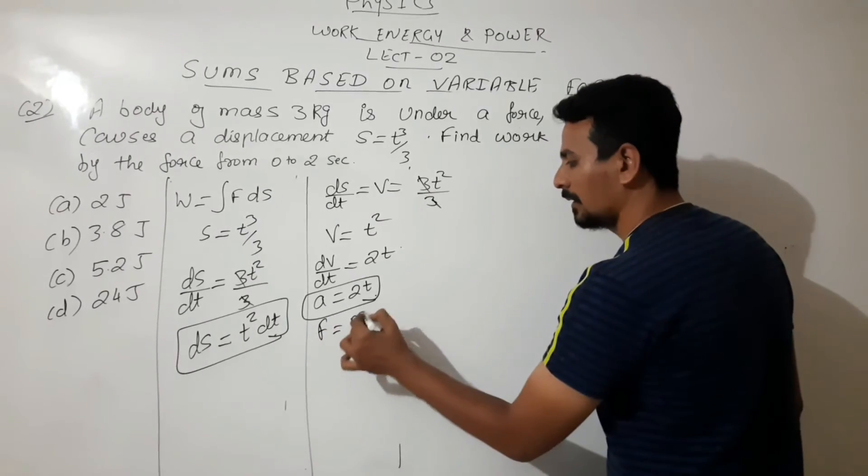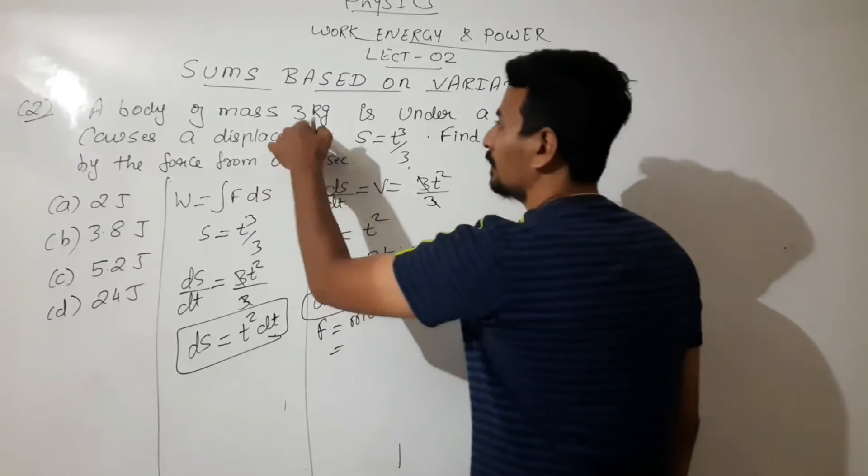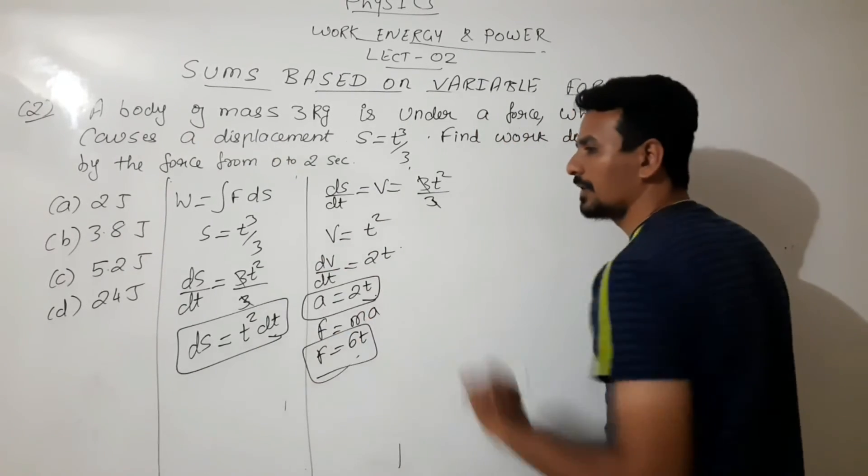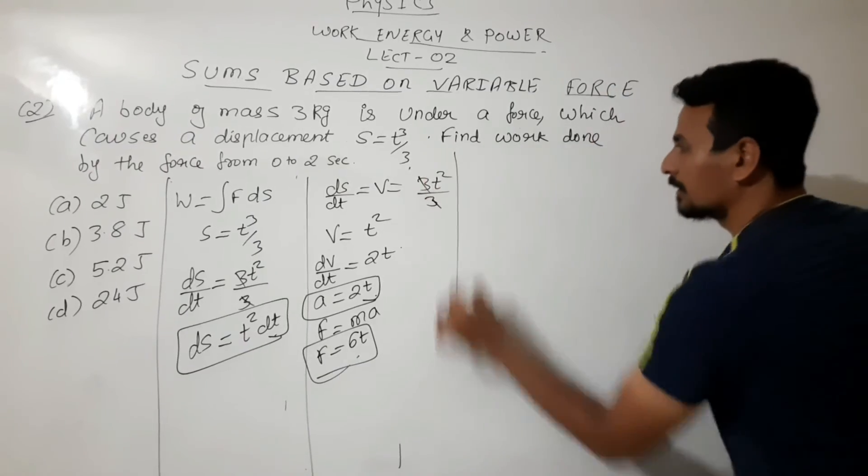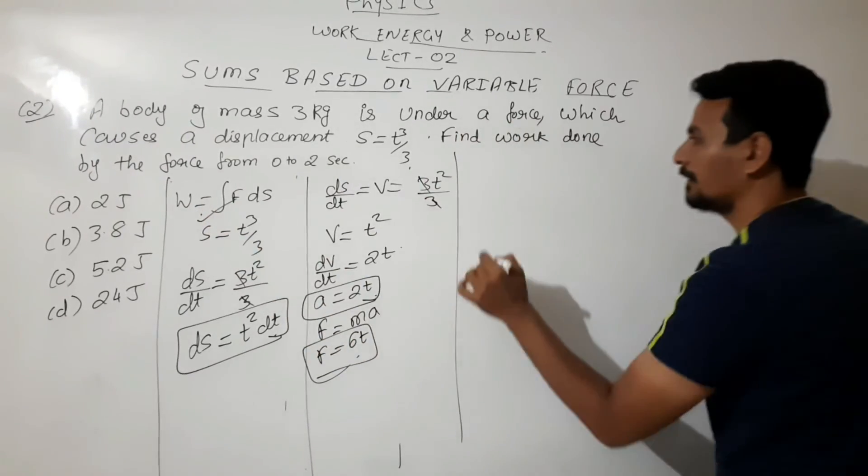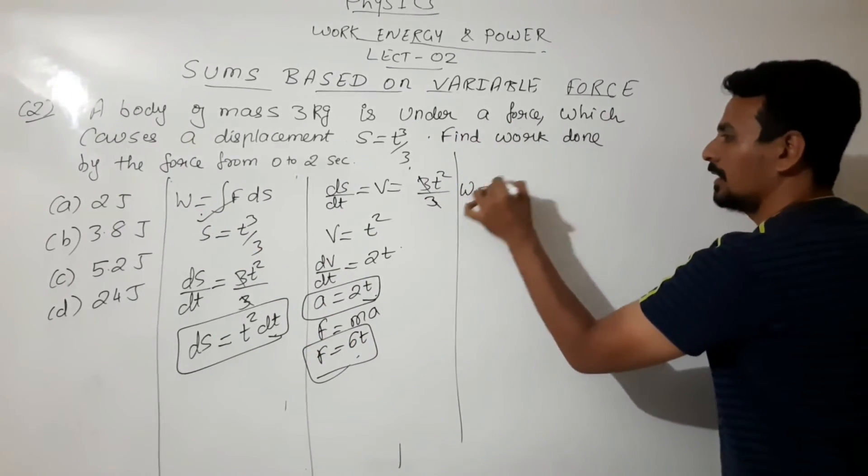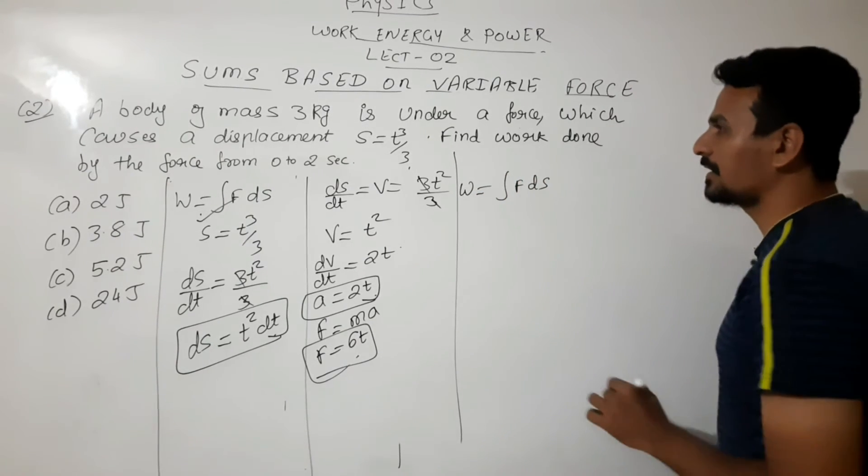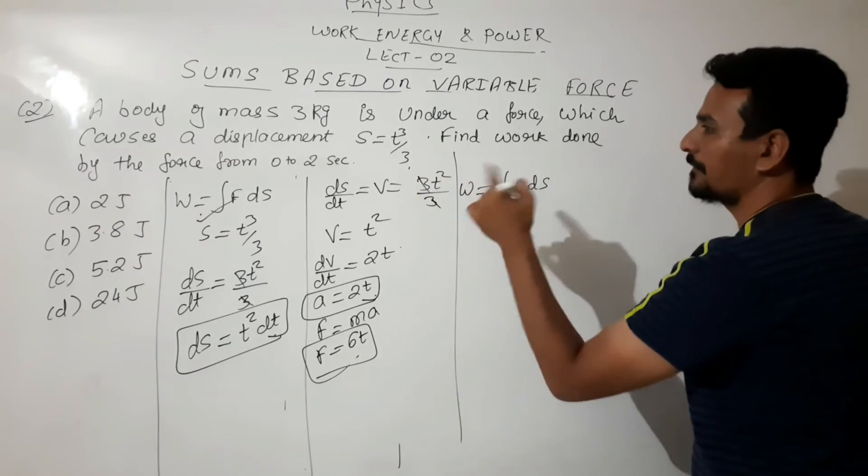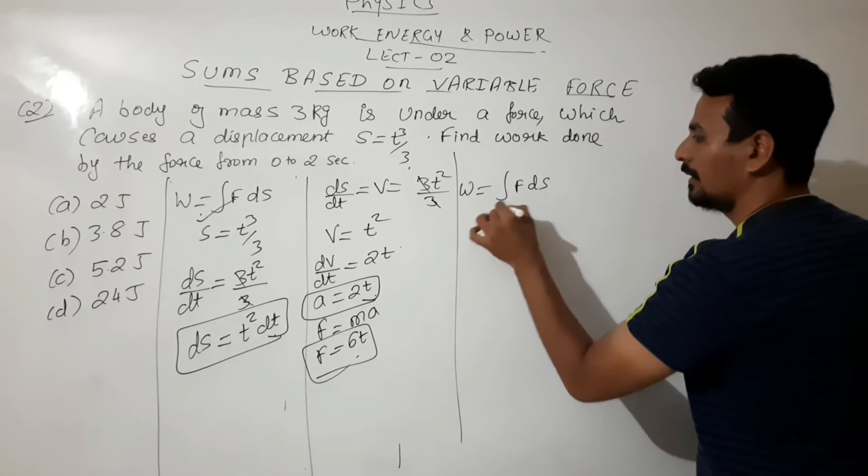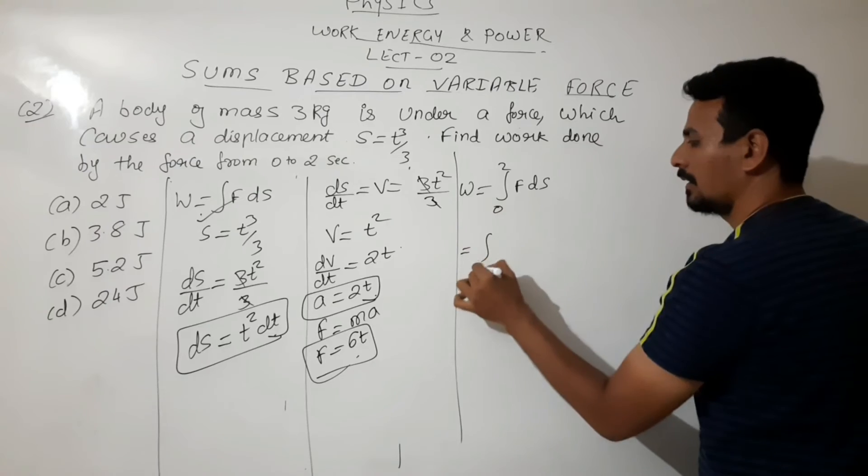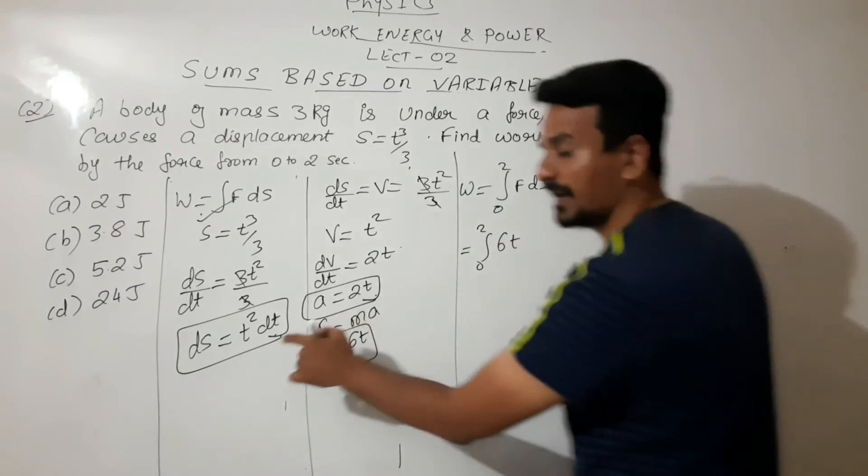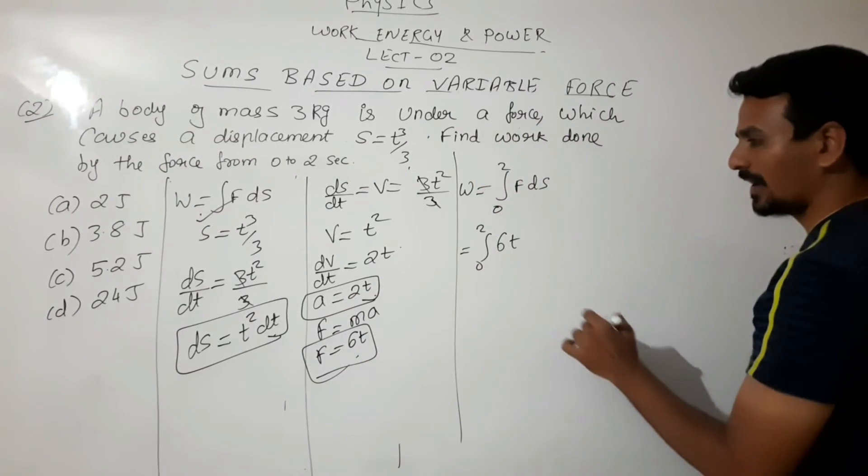What is F? F is ma. Mass is given to you: 3. So F = 3 × 2t = 6t. So now you know the value of F, you know the value of displacement. Substitute in this formula. Work done is F into ds. You can apply the limit. Limit is given in the form of time 0 to 2 seconds. Instead of F I can write as 6t, and instead of ds I can write as t² dt. So it will be 6t³ dt.